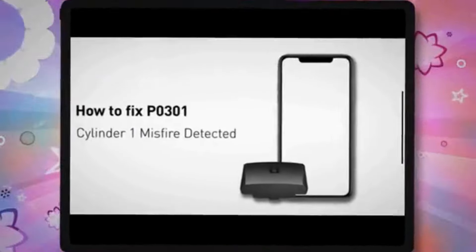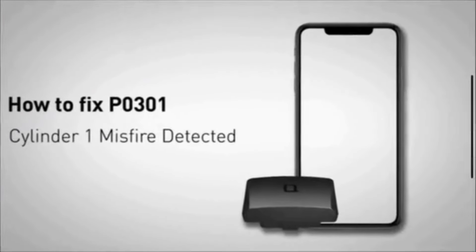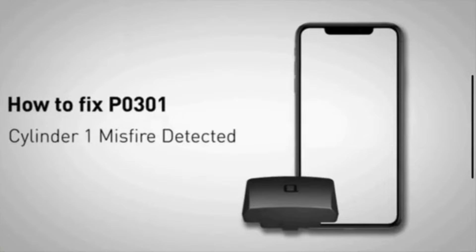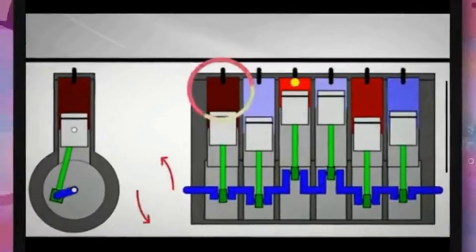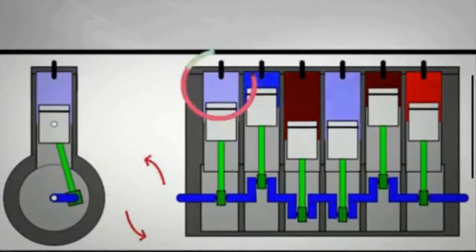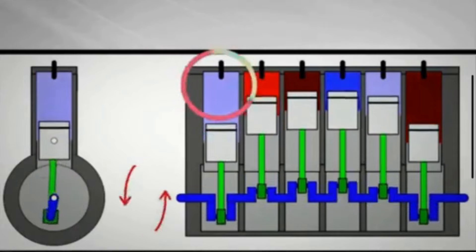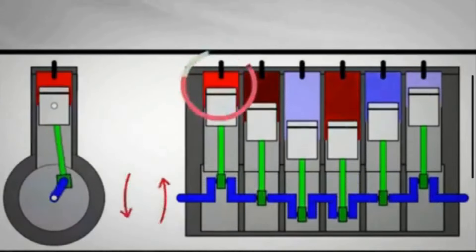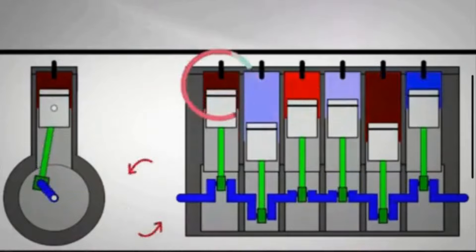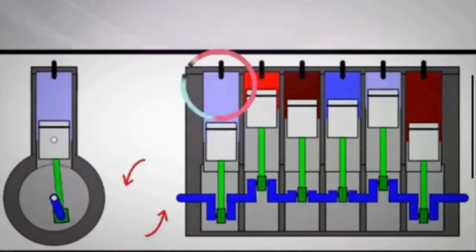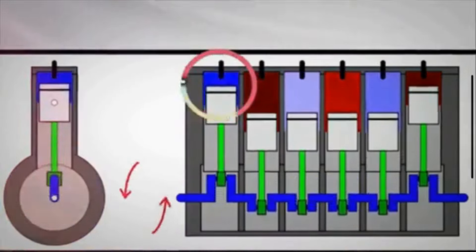Hi guys, welcome to Mechanical Boost. In this video, we are going to discuss the PO301 code causes and how to fix it. The PO301 code is a diagnostic trouble code that indicates a misfire in cylinder 1 of the engine. Each cylinder in an engine is numbered, and PO301 specifically refers to a misfire in the first cylinder.